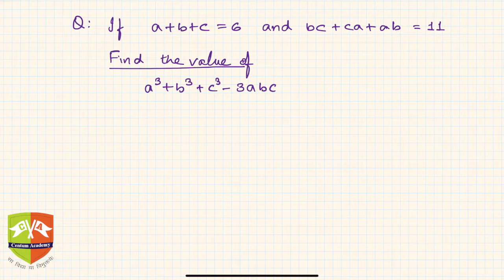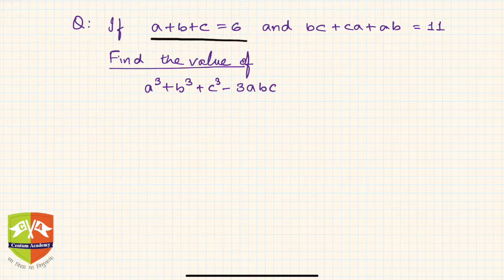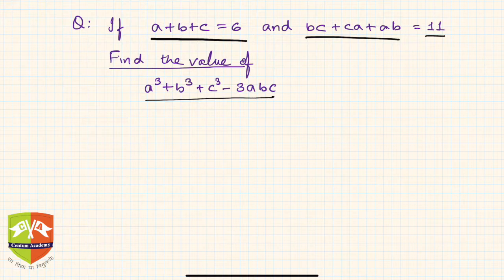This question says: if a plus b plus c is equal to 6, and bc plus ca plus ab is equal to 11, you have to find the value of a cube plus b cube plus c cube minus 3abc. The moment you see this, you know the first thing which should come to your mind is a special identity which we learned.